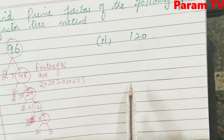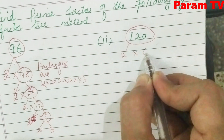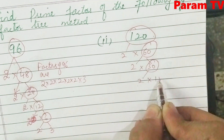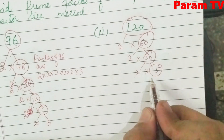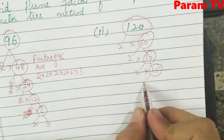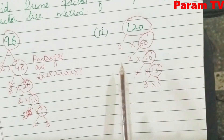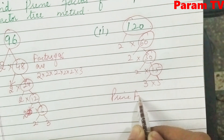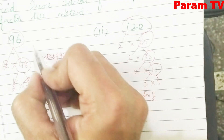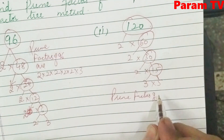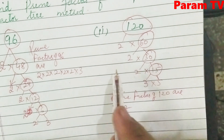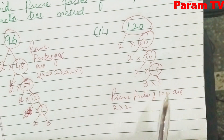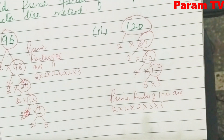Let's do one more. This is 120. Circle it. 2 into 60, then 2 into 30, then 2 into 15. Then for 15, 2 ke table mein 15 nahi aata — 3 fives are 15. So 2, 3, 5 are all prime numbers. Prime factors of 120 are 2 × 2 × 2 × 3 × 5. These are the prime factors of 120.